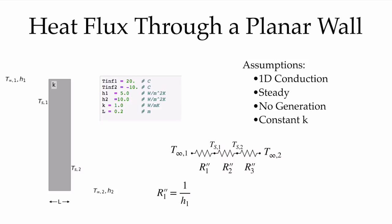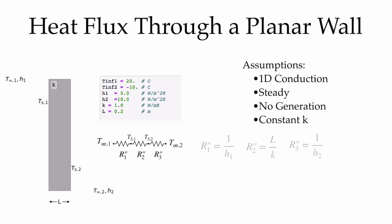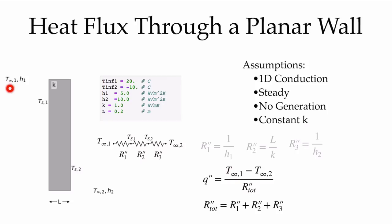Similarly, R''3, the area-specific thermal resistance for R3, is the convection on the outside, so that's 1/H2. And R''2 is our conduction resistance in area-specific form, which is simply L/K. In order to solve for the heat flux, we know that it's equal to T∞1 minus T∞2 over the total resistance. And because all of these resistors are in series, the total resistance is simply R1 plus R2 plus R3.